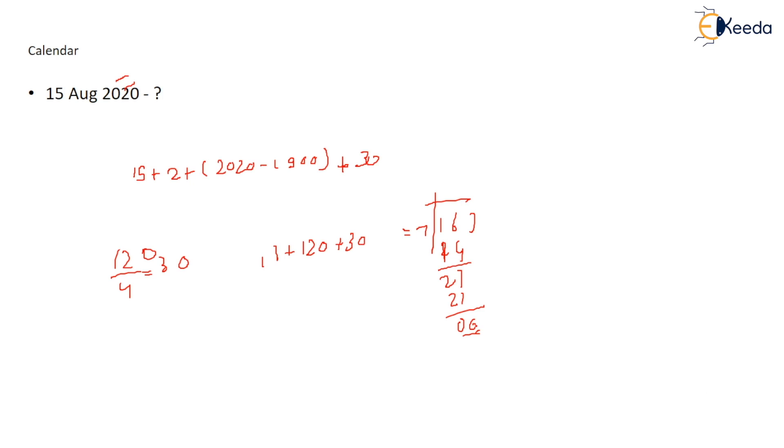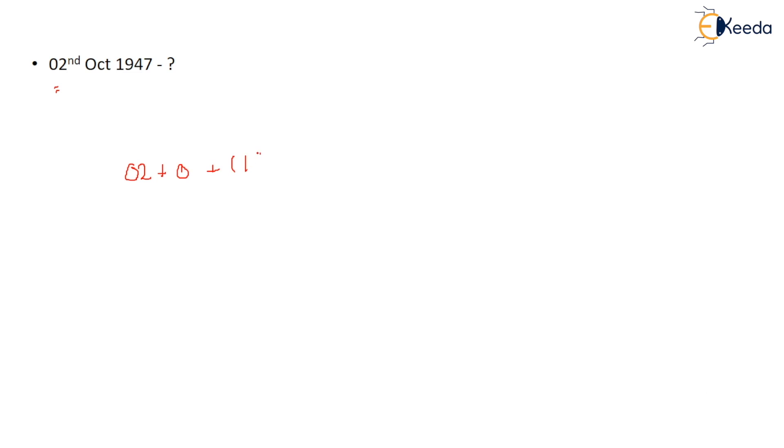Last question, you have to apply same thing here. So let's say 02 October. 02 October, code what we wrote for October? 0 plus 1947 minus 1900.